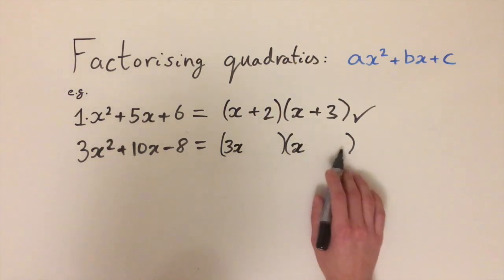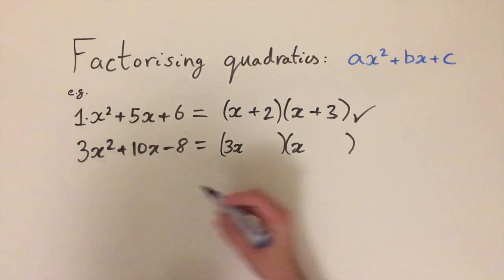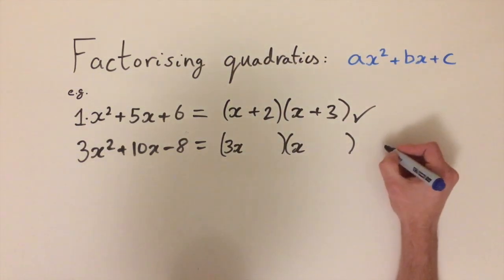So now we just need to work out what two numbers go here to give us the rest of this expression. So we're looking for two numbers that multiply to get minus 8. So firstly let's think about how we can do that.